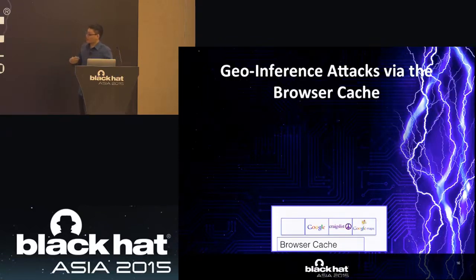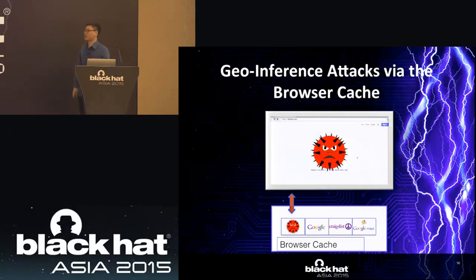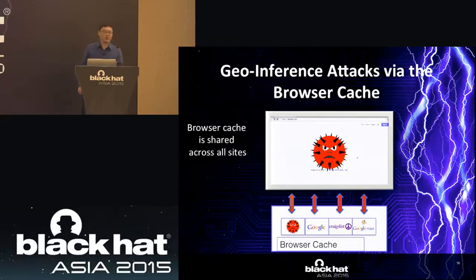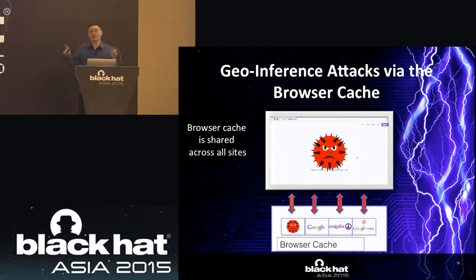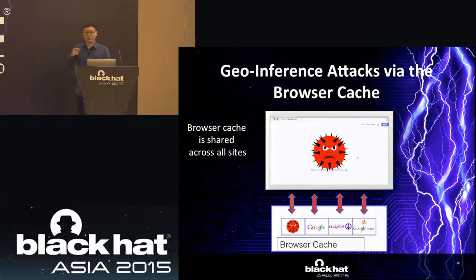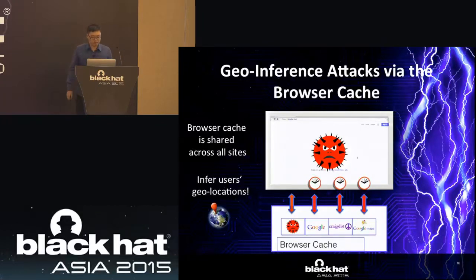When users visit geo-oriented websites like Google, Craigslist, and Google Maps, and then visit a malicious website — because browser cache is shared across all sites — the malicious website can measure the loading time of resources from other sites and determine the cache status of geo-related resources. Since these resources reflect the user's geolocation (like Google's logo reflecting the user's country), the attacker can infer the user's geolocation. This is the core idea of how geo-inference attacks work.